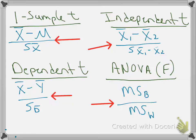So in all four of these formulas, we've got the same thing going on: how big is the observed difference between the sample means compared to the amount of difference we would expect to get just due to random sampling? And that is the standard error on the bottom of all these formulas.